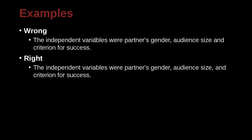'The independent variables were partners, gender, audience, size, and criterion for success.' Here we can see the incorrect version is missing the last serial comma before 'and.' Remember to always include that final serial comma in a list.